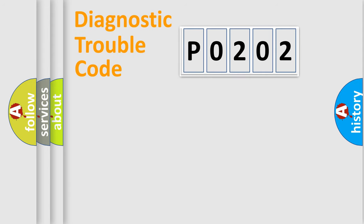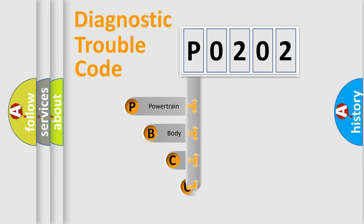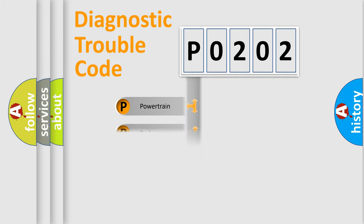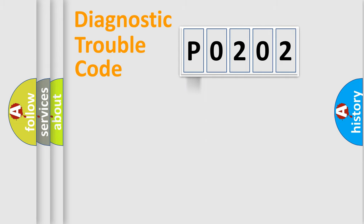Let's do this. First, let's look at the history of diagnostic fault code composition according to the OBD2 protocol, which is unified for all automakers since 2000. We divide the electric system of the automobile into four basic units: Powertrain, Body, Chassis, and Network.